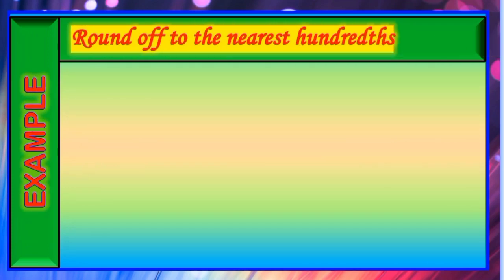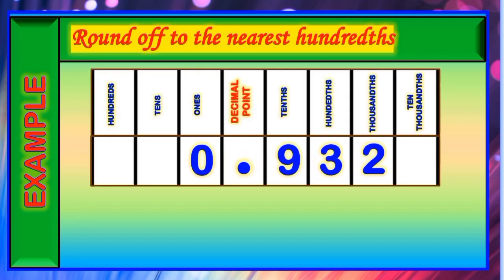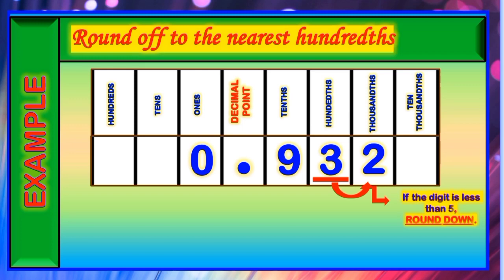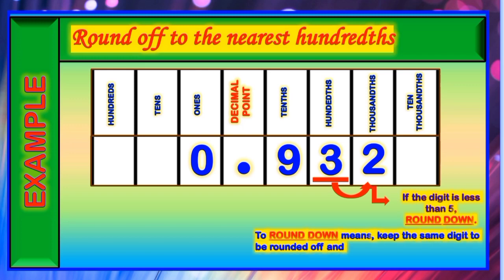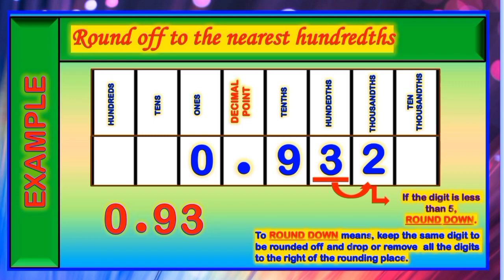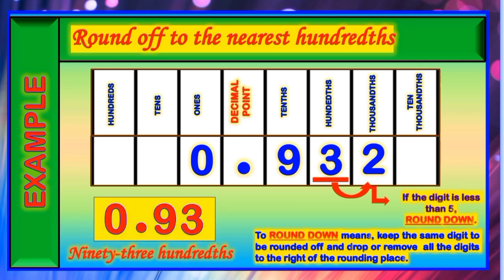Let us have an example of a decimal rounded off to the nearest hundredths. The given decimal number is 0 and 932 thousandths. The digit in the rounding place is the digit 3, and the digit to its right is the digit 2. Since 2 is less than 5, we are going to round down — we retain the digit 3 and remove the digit 2. Therefore, the final answer is 0 and 93 hundredths.